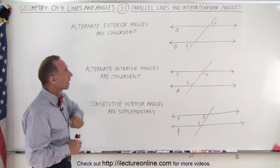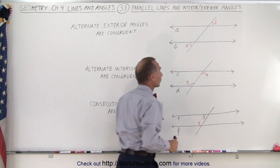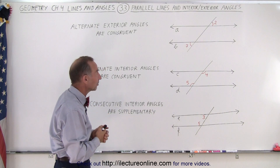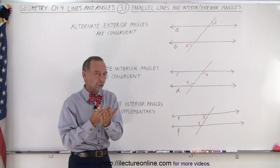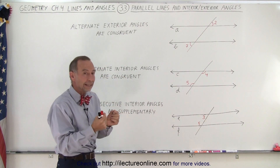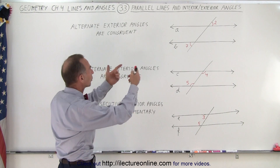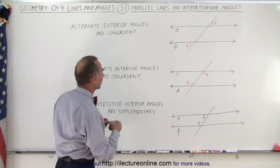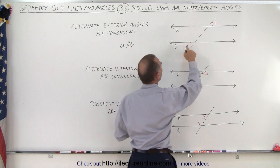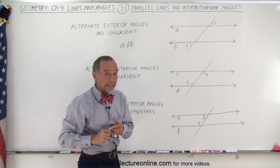Here we have three different cases. Here we're looking at the two corresponding exterior angles, and we can clearly see that they are congruent — they have the same angular size. We can conclude that if a transversal cuts through two lines and the corresponding exterior angles are congruent, then the two lines must be parallel. So in this case, A must be parallel to B because the two corresponding exterior angles are equal to one another.